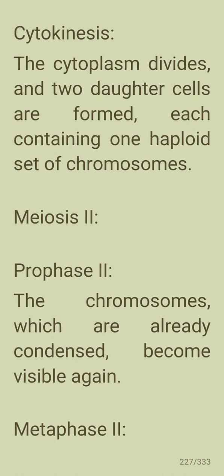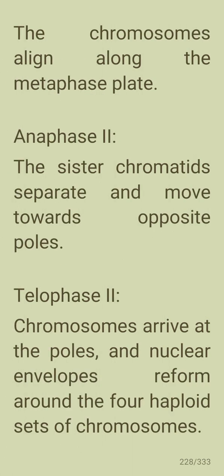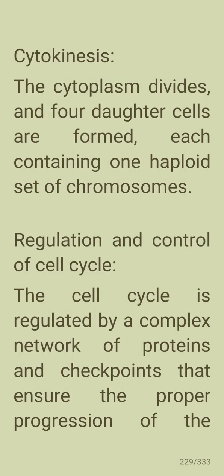In meiosis two, prophase two sees the already-condensed chromosomes become visible again. In metaphase two, chromosomes align along the metaphase plate. In anaphase two, the sister chromatids separate and move towards opposite poles. In telophase two, chromosomes arrive at the poles and nuclear envelopes reform around four haploid sets of chromosomes. A final cytokinesis produces four daughter cells, each containing one haploid set of chromosomes.